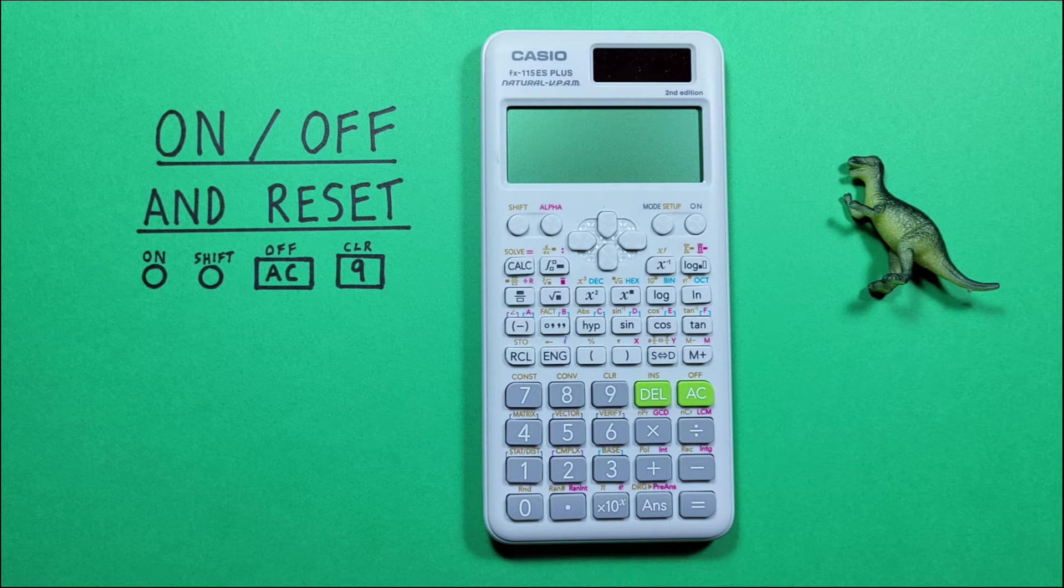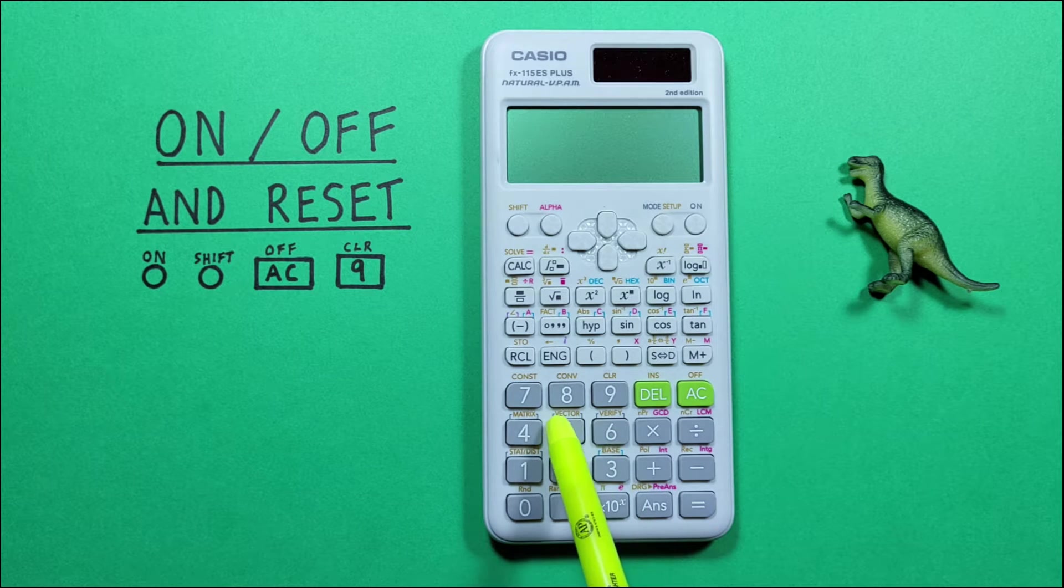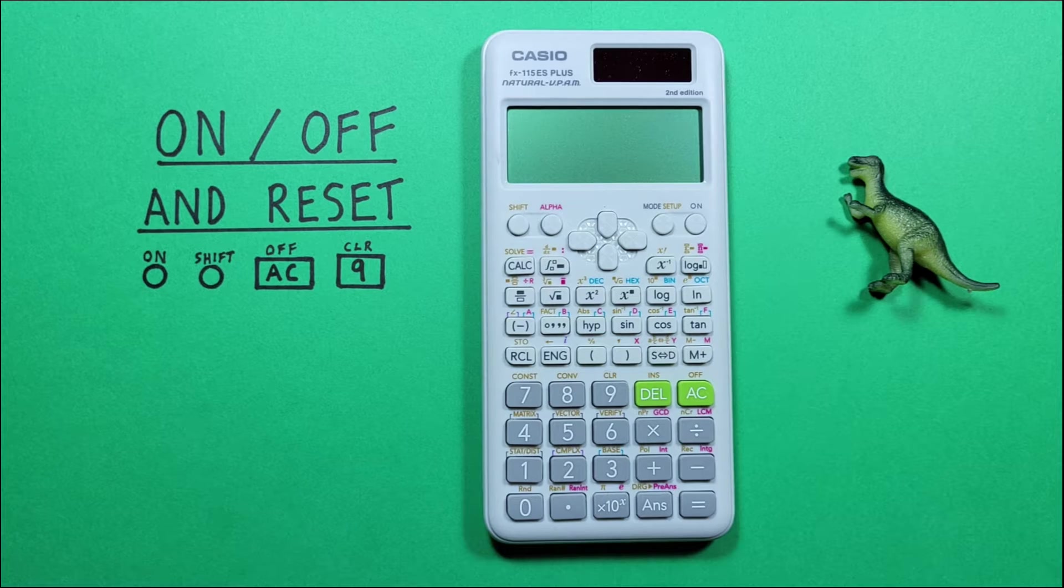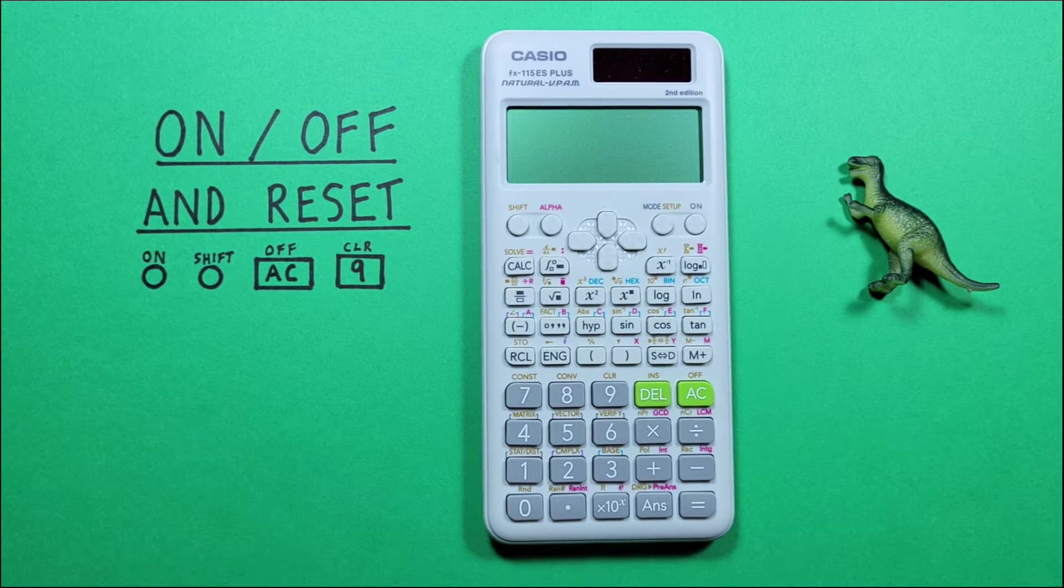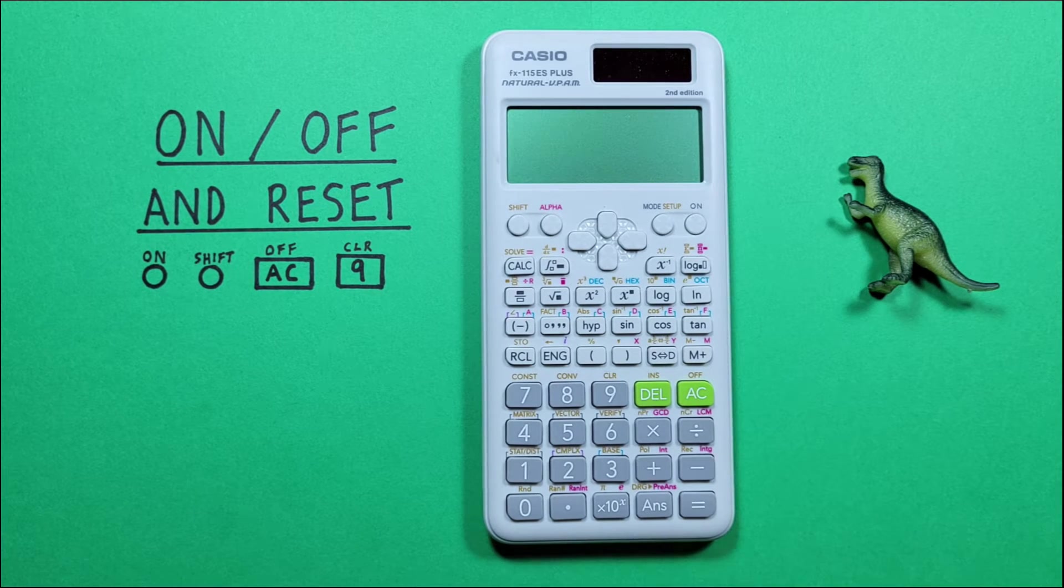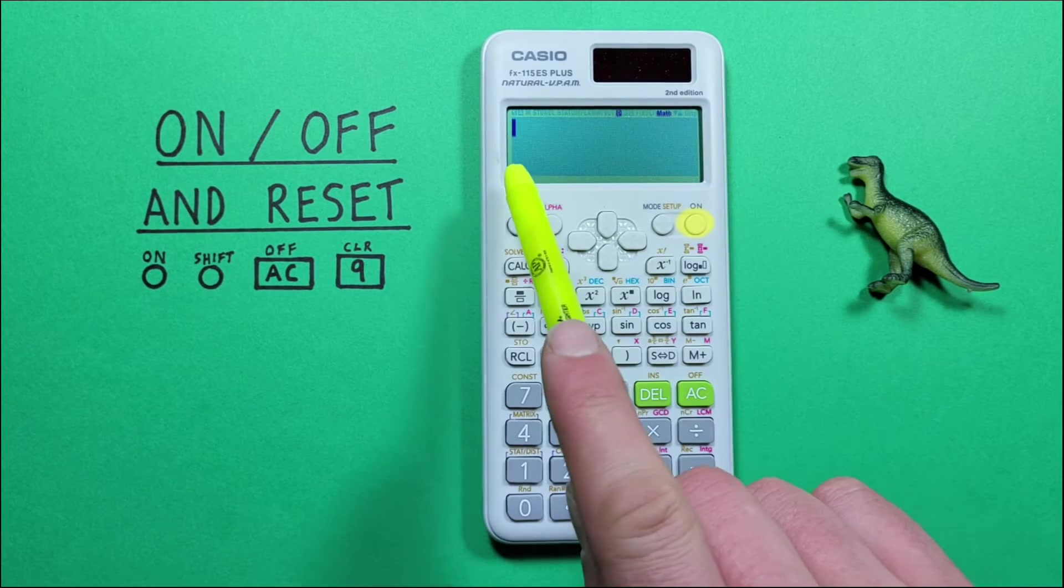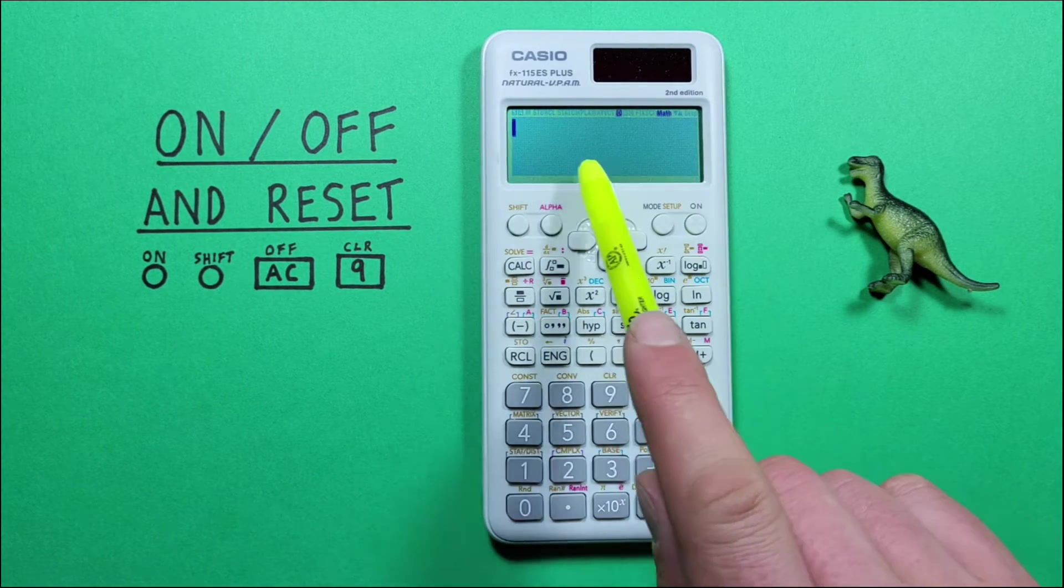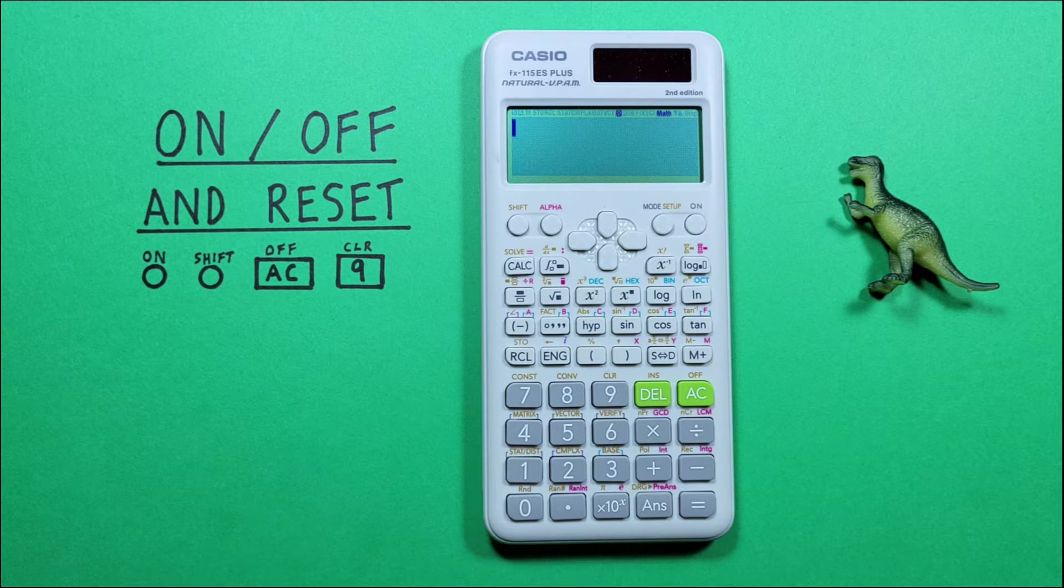To get started, if our screen is blank and when we press keys nothing happens, our calculator is OFF and we want to turn it ON. We do this by pressing the ON key here. There we go, we see our screen light up and our cursor is on there and we can now work with it.